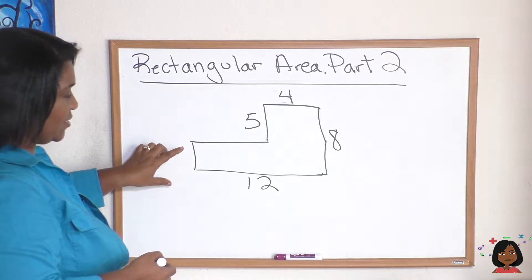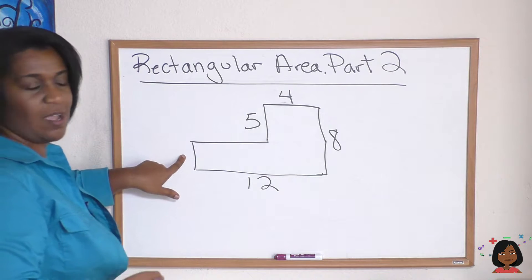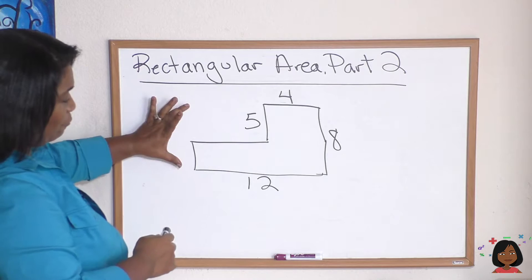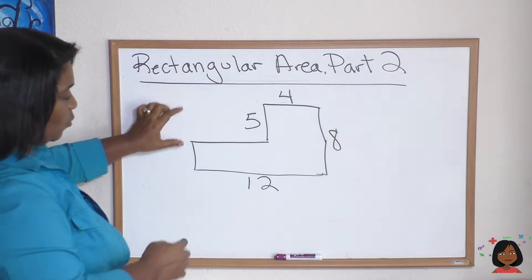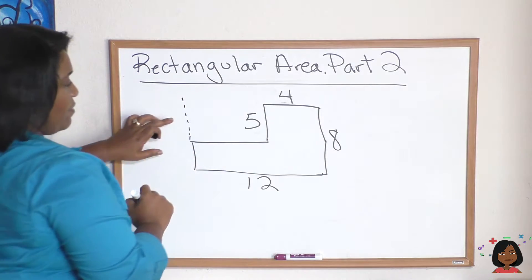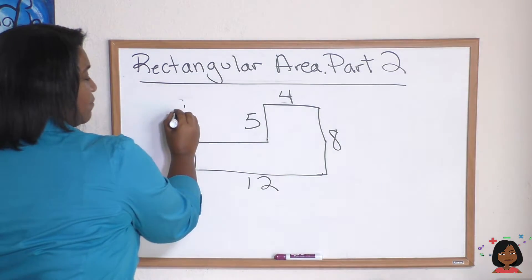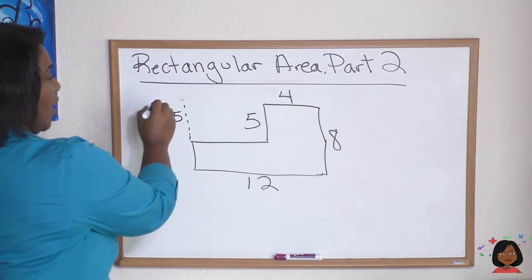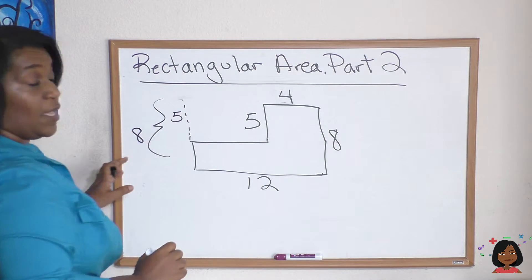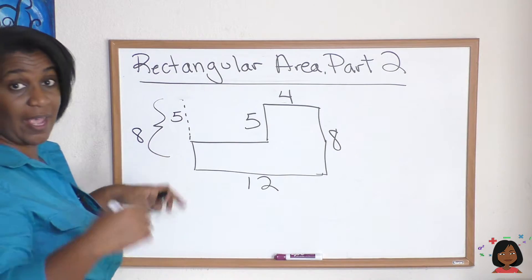Well first thing we can do is figure out the missing sides. Let's tackle this one here. We know that this full side is eight, which means that this was a full rectangle, this piece would be five. So I'm gonna break this down. That would be five because this is five. And the whole thing would be 12, excuse me, eight, which makes this side a three.